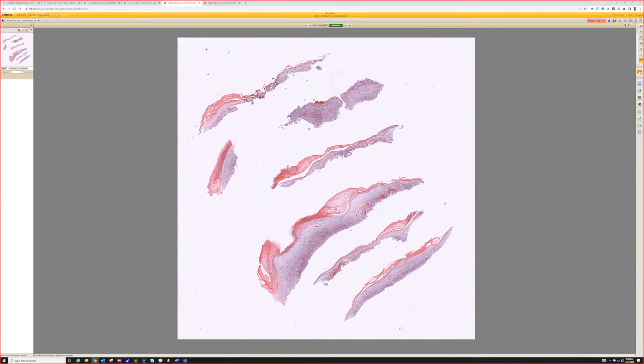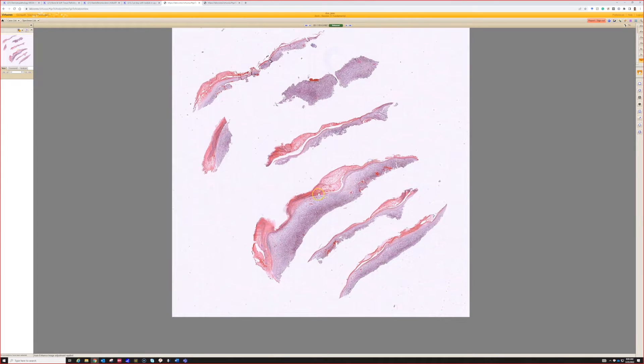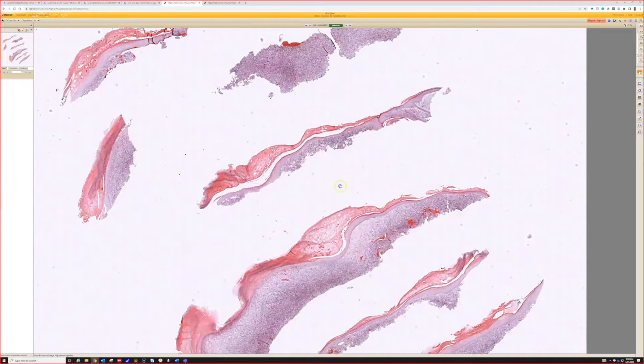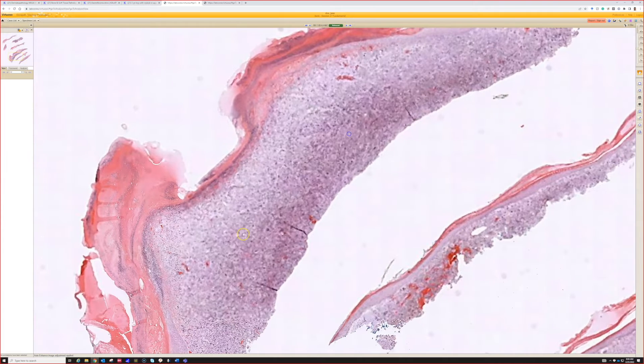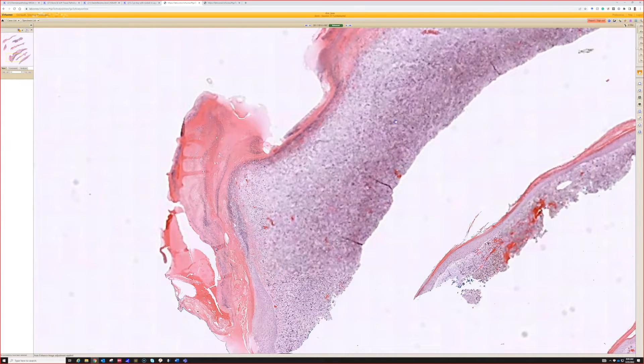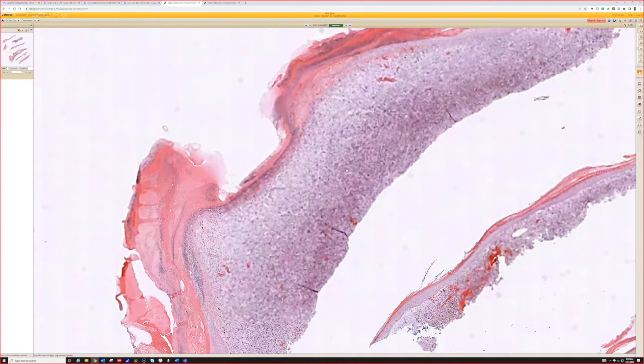Okay, now we're on to case 6. So I can take this. Okay, so we see kind of ulcerated skin here with crust. Good. And a lot of inflammatory cells below it.